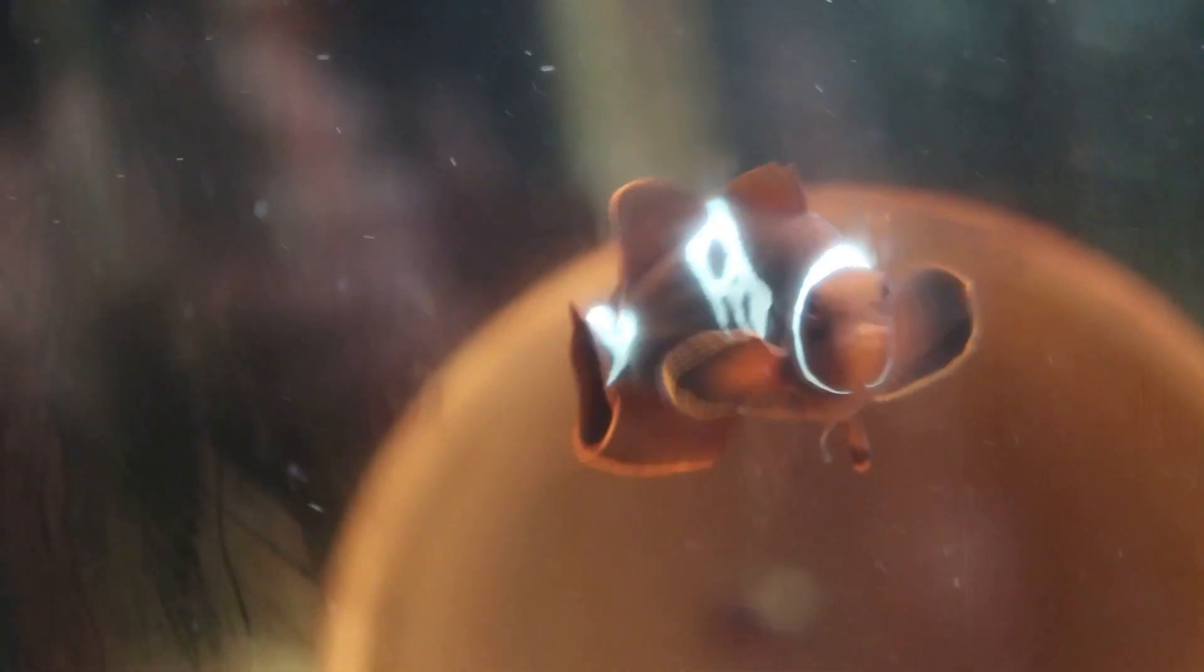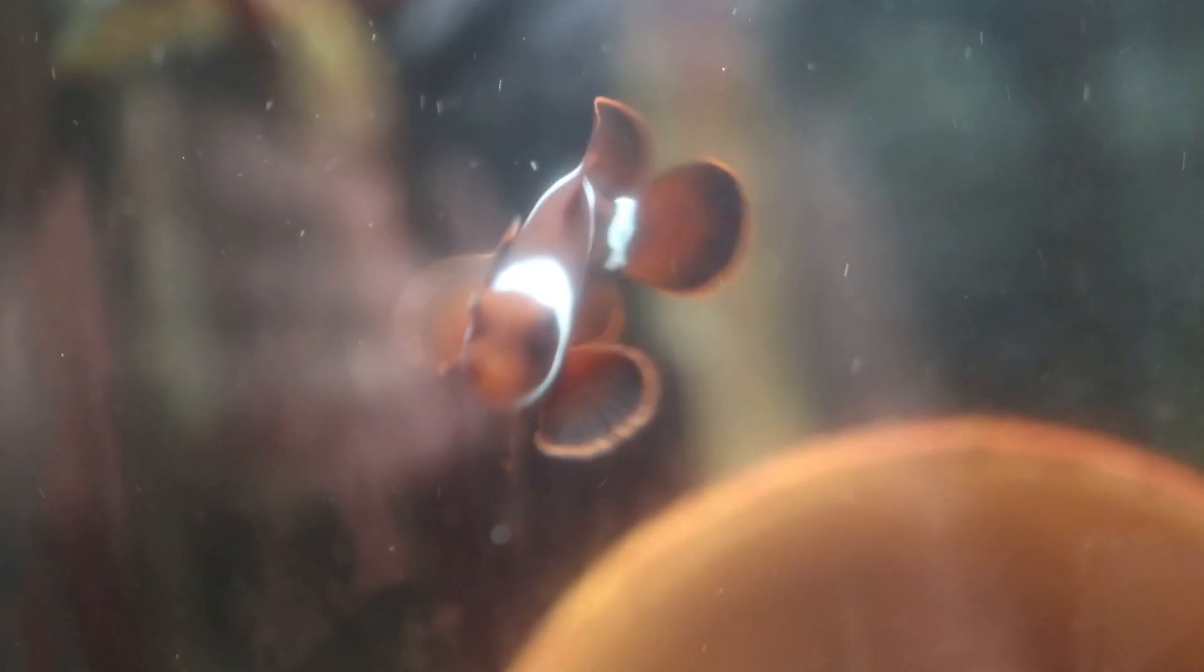Here we have a look at the lightning maroon clownfish I have. Unfortunately, I do not have a mate for this fish. I do want to get one at some point. I will have to get probably a bigger tank for this fish. These are pretty aggressive once they get bigger, especially the females. So I would set this up so that this one is the female, and then whatever one I get it will be smaller and be the male.